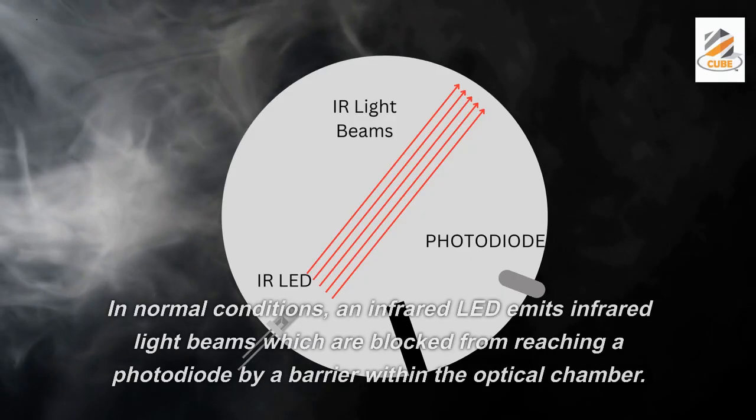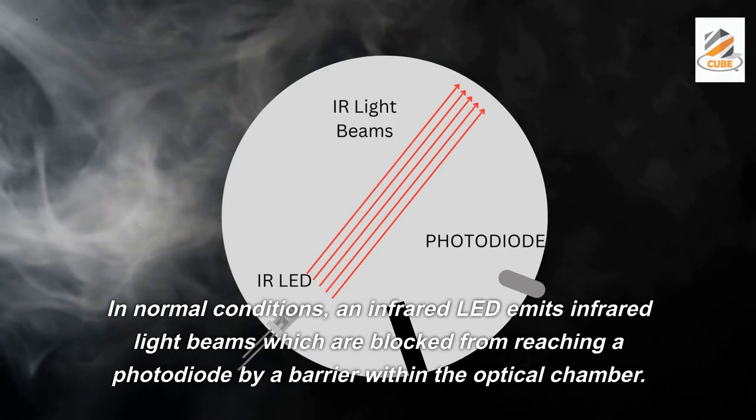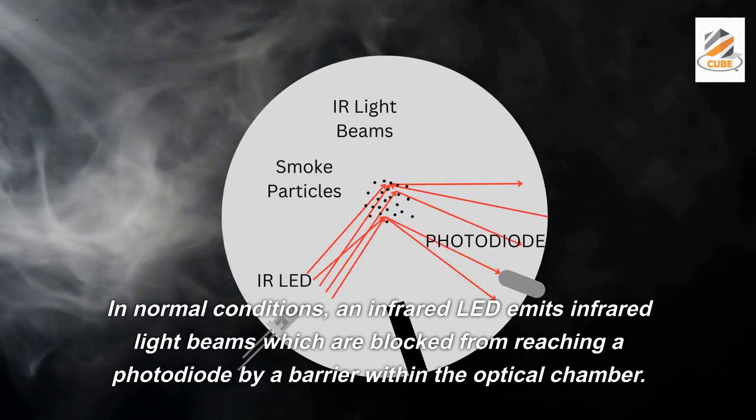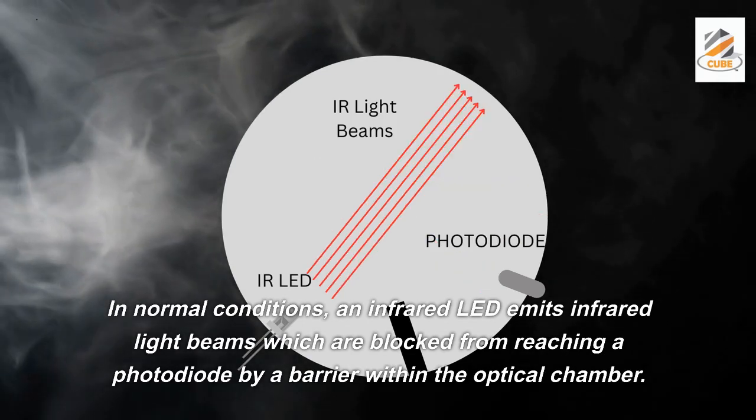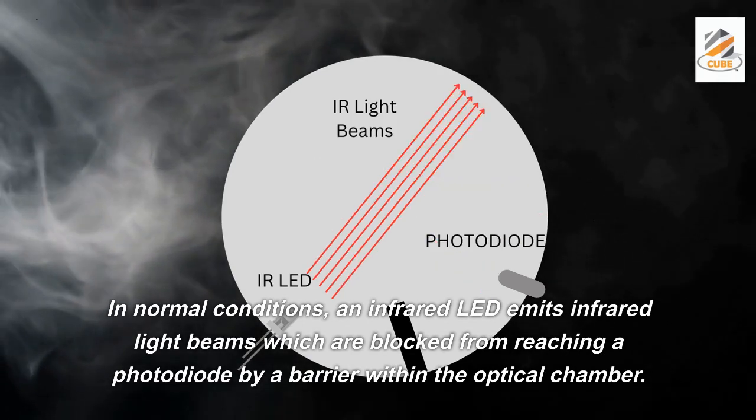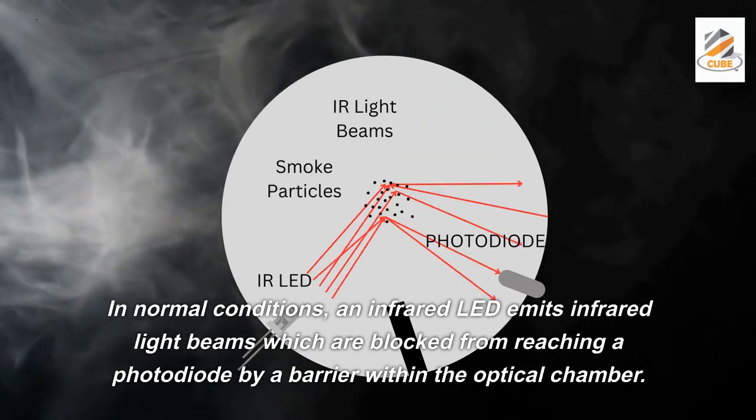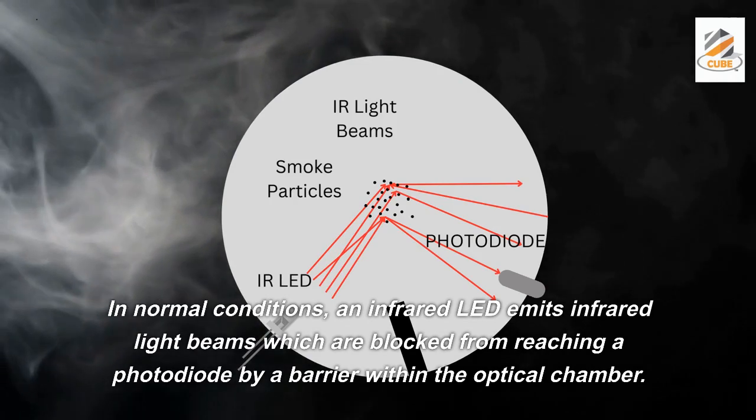In normal conditions, an infrared LED emits infrared light beams which are blocked from reaching a photodiode by a barrier within the optical chamber.